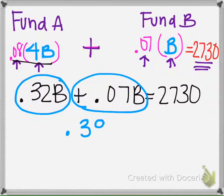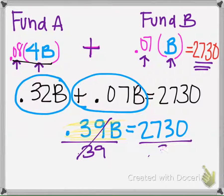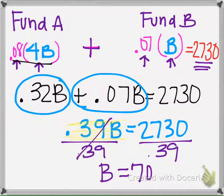The very last step when our variable is isolated is we divide, and we get B equals $7,000. So that means she's going to invest $7,000 into Fund B.